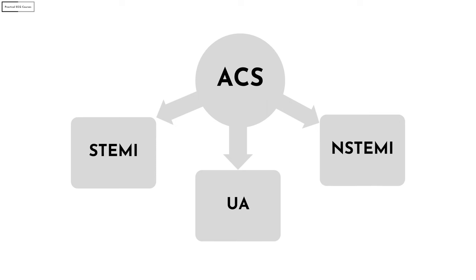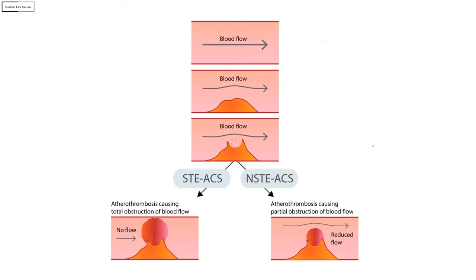Acute coronary syndrome occurs when there is a sudden occlusion of the coronary arteries resulting in myocardial ischemia or infarction. Clinically it is manifest in three ways: STEMI, NSTEMI, and unstable angina. To understand the STEMI-NSTEMI paradigm you must have a clear understanding of the pathophysiology of ACS.